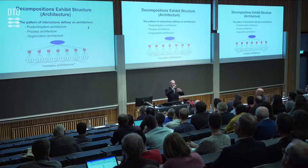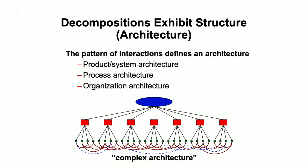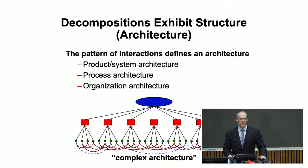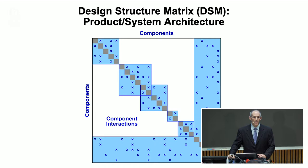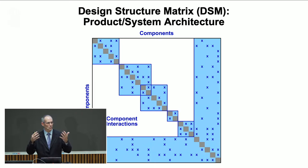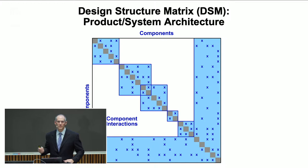There are many ways to get our head around that structure and architecture — a whole field of network analysis. We use a particular approach called DSM, or Design Structure Matrix. We make a matrix to represent these networks of connections. In the abstract, we can use that network to model the system or product architecture as a set of connections across the components.